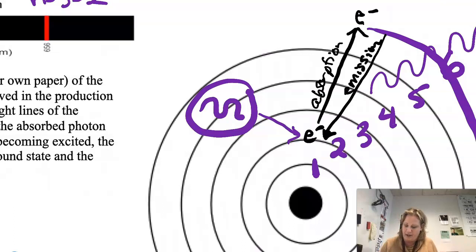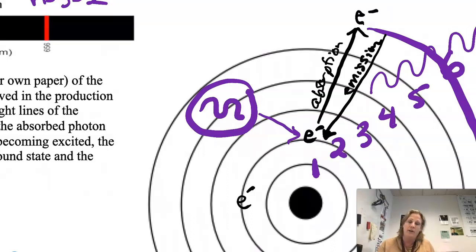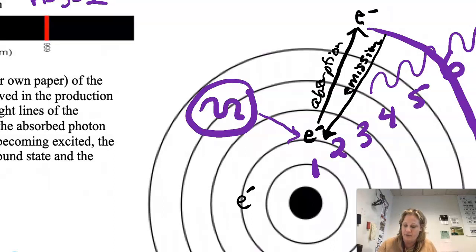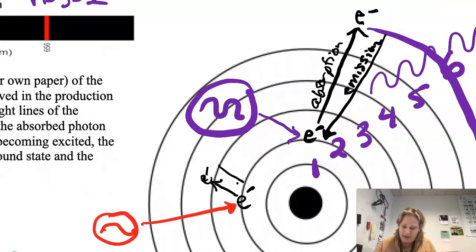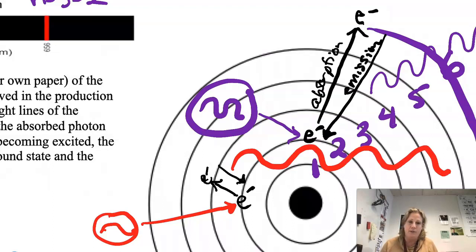The reason you see all these colors is that there are many different hydrogen atoms, each with one electron, all doing these transitions. Many are doing the red transition and many are doing the violet transition, so you see those bright lines. If an electron is at n=2 and absorbs a red photon — a little less energy, bigger wavelength — it will only go from n=2 to n=3, then come back and undergo emission, giving a longer wavelength color.